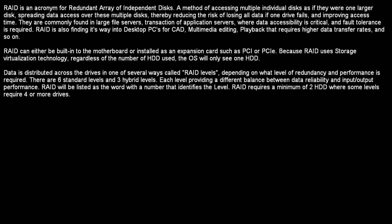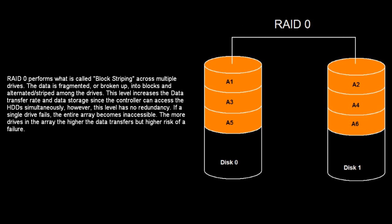I will only be discussing the basic or most commonly used levels in desktop PCs. The first one is RAID 0. RAID 0 isn't really a RAID at all — it has no redundancy, no tolerance, no nothing. It performs what is called block striping across multiple drives. The data is fragmented or broken up into blocks and alternated or striped among the drives. This level increases the data transfer rate and storage since the controller can access the hard disk drives simultaneously. However, this level has no redundancy. If a single drive fails, the entire array becomes inaccessible. The more drives in the array, the higher the data transfers, but also the higher the risk of failure.